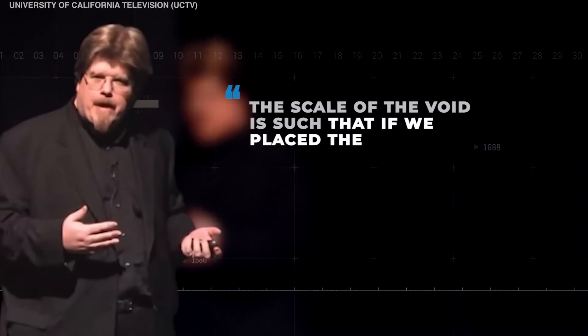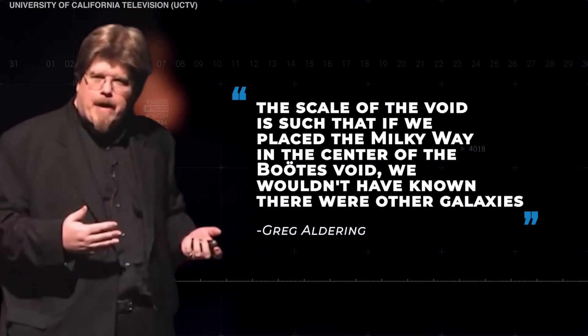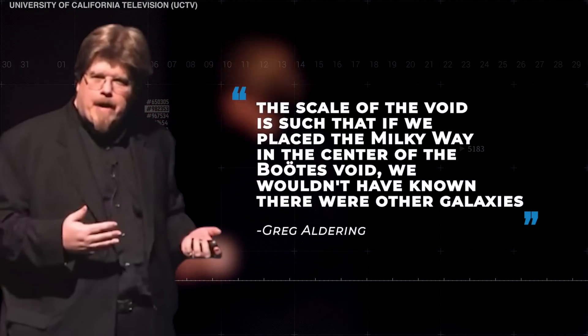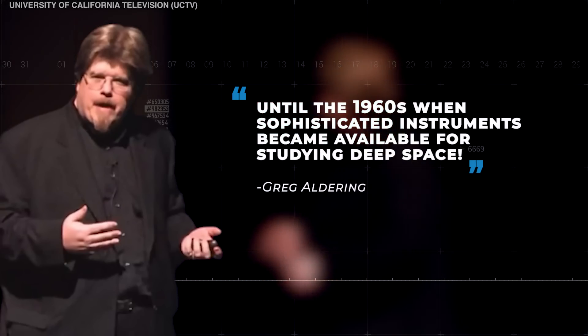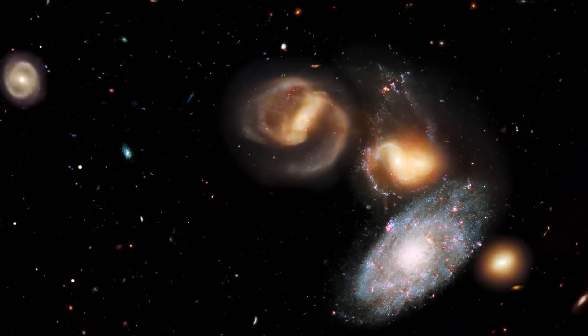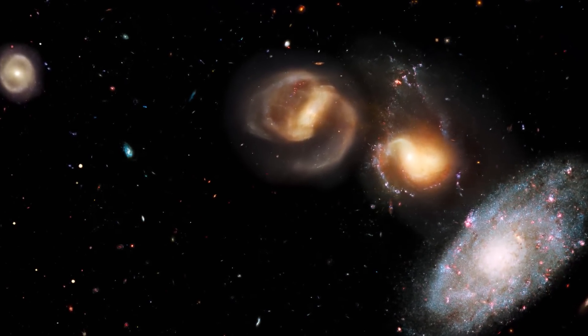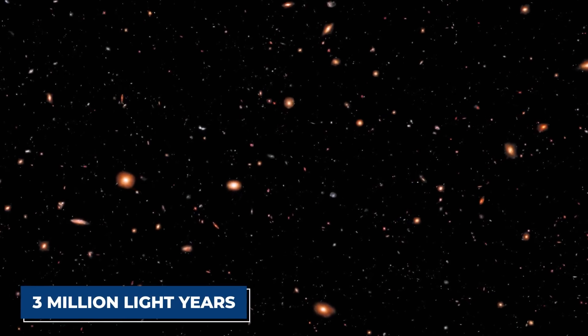In fact, as astronomer Greg Aldering explains, the scale of the void is such that if we placed the Milky Way in the center of the Boötes Void, we wouldn't have known there were other galaxies until the 1960s when sophisticated instruments became available for studying deep space. Here again is for context, the Milky Way has approximately two dozen neighbors in a region of space just 3 million light-years across.